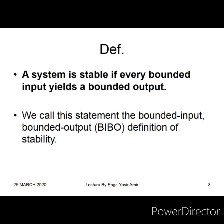Now I give you the formal definition of stability: a system is stable if every bounded input yields a bounded output. This definition is also called BIBO stability — bounded-input bounded-output stability. This definition says: we have a system, we give it a bounded input (bounded from both positive and negative sides, within a finite number less than infinity), and the system produces an output — both transient and steady state — that also remains within a bound.